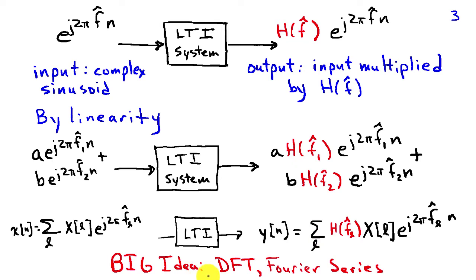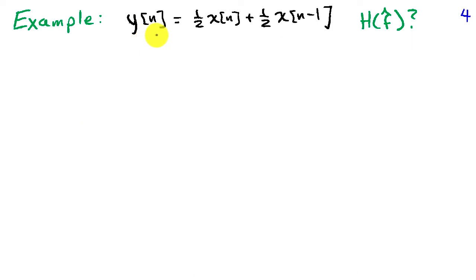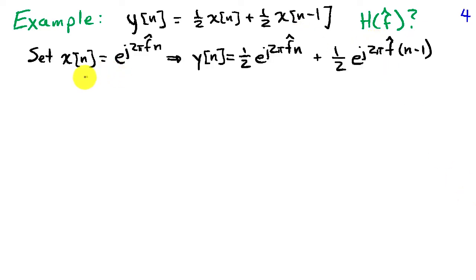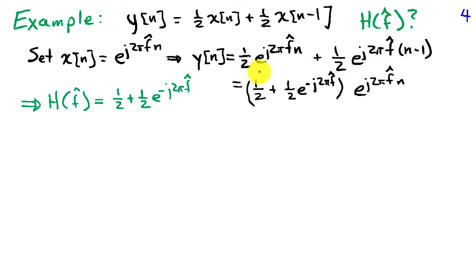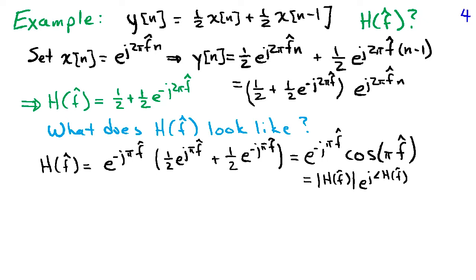This is one of the reasons that Fourier methods are so powerful. Suppose the output y of n is one-half x of n plus one-half x of n minus 1 — that is, y of n is the average of the two most recent inputs. We apply an input consisting of a complex sinusoid at frequency f-hat, giving us y of n equal to one-half e to the j 2 pi f-hat n plus one-half e to the j 2 pi f-hat times (n minus 1). We factor out the terms independent of n, leaving the complex sinusoid times one-half plus one-half e to the minus j 2 pi f-hat. So the frequency response is the term multiplying the complex sinusoid.